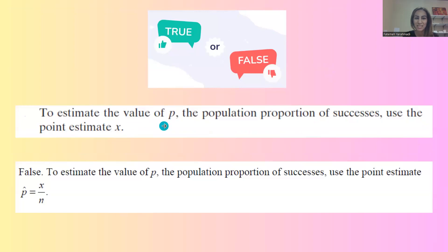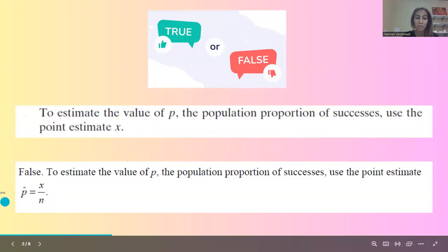To estimate the value of P, which is the population proportion, we use a point estimate which is defined as P hat equals x divided by n. So it is false.